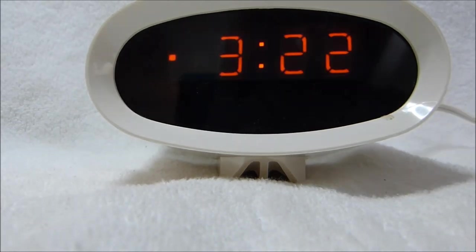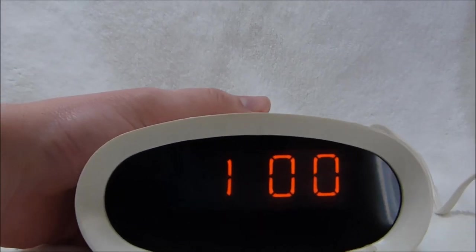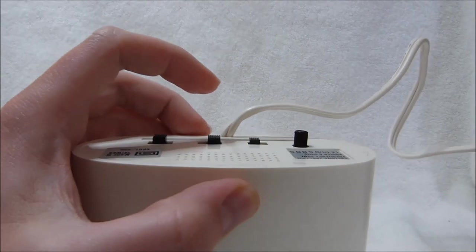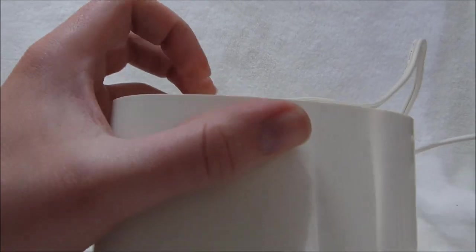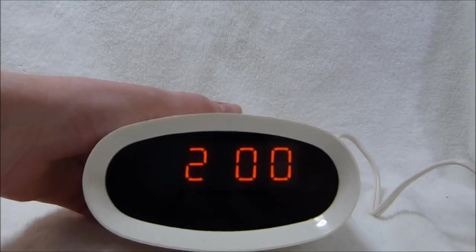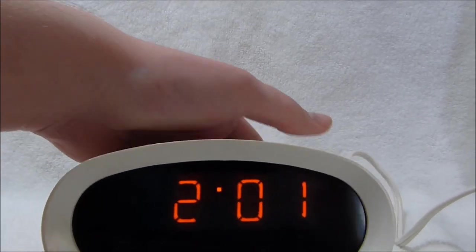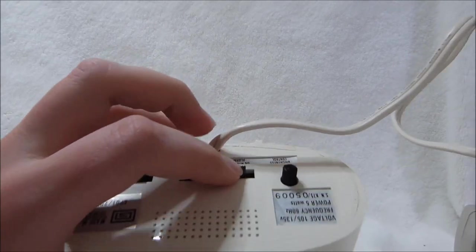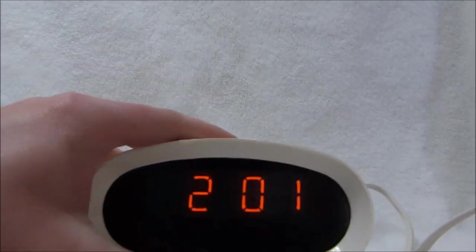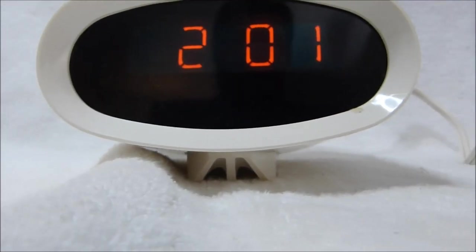I'm going to unplug the clock right now just for my ease of setting up the alarm. So I'll set the time to 2:01. And I will set the alarm to, we'll say 2:02. Take it out of set mode. So the time is 2:01, and I'll move the alarm switch to the on position. You can see both colons are lit up. So the alarm is active. And now I'll wait one minute for the alarm to go off.